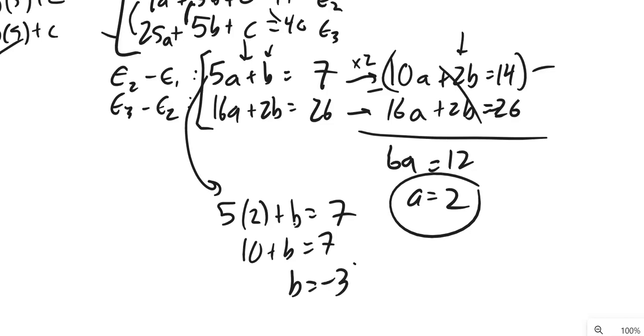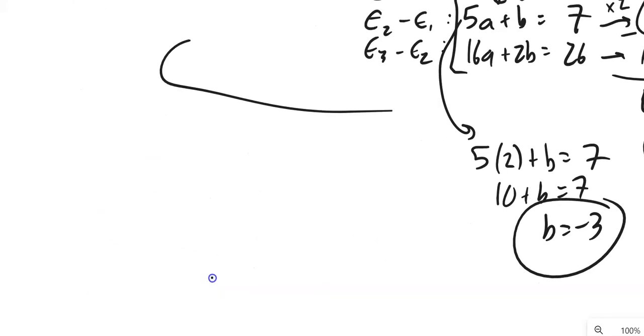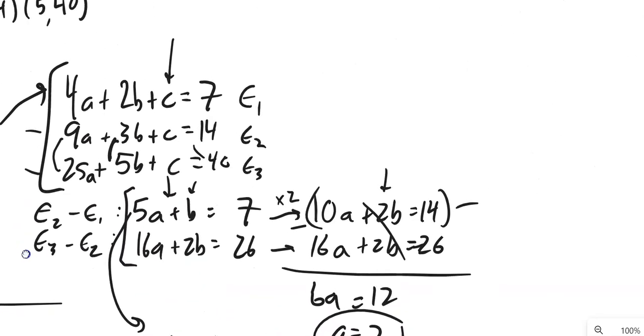Just use one where we only have two variables in it. So, it looks like b must be negative 3. When a's 2 and b's negative 3, let's grab. Whoa, hello. Let's grab this equation.